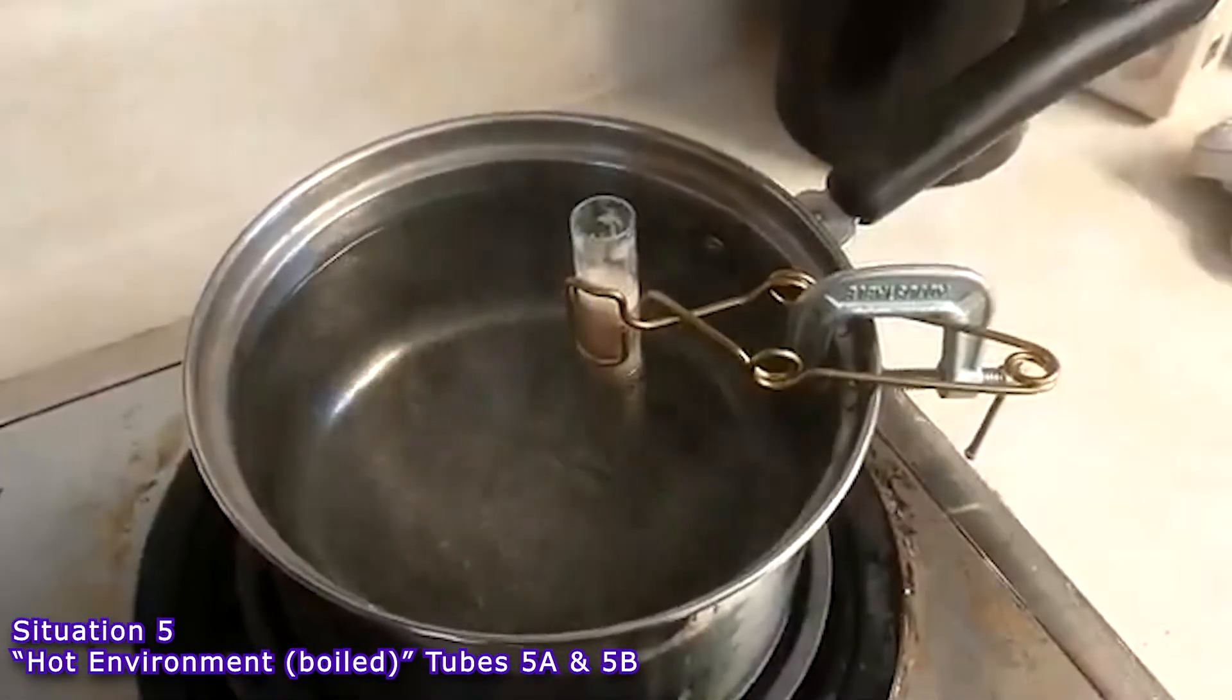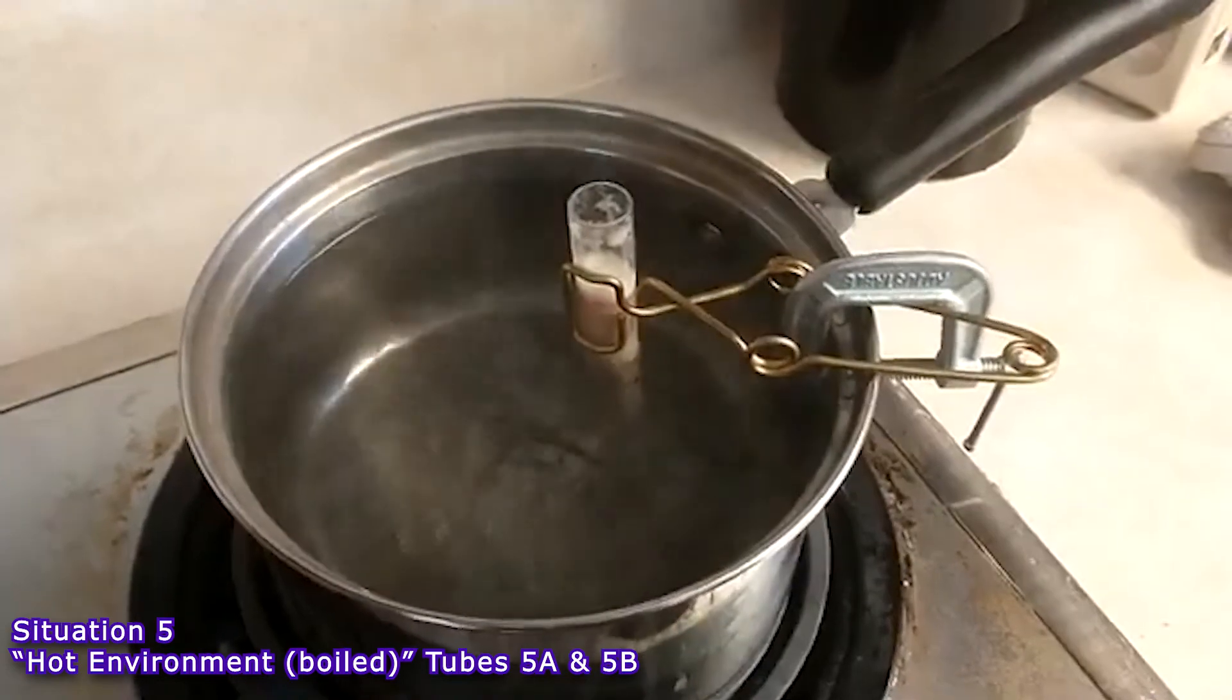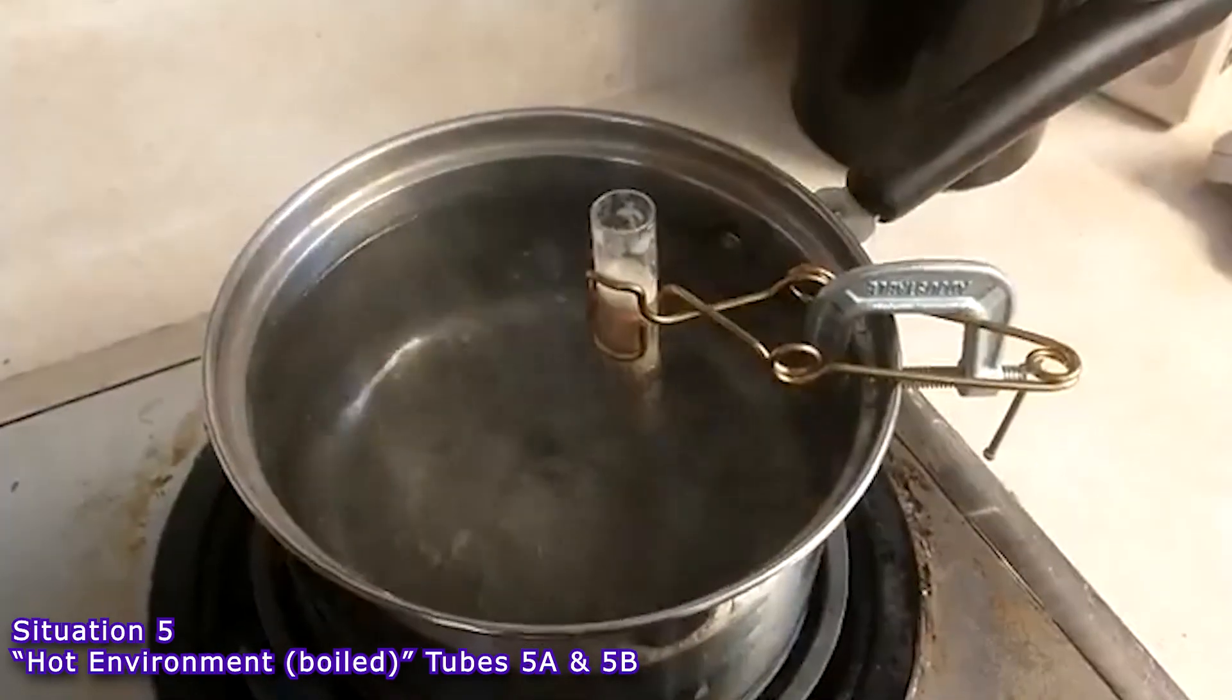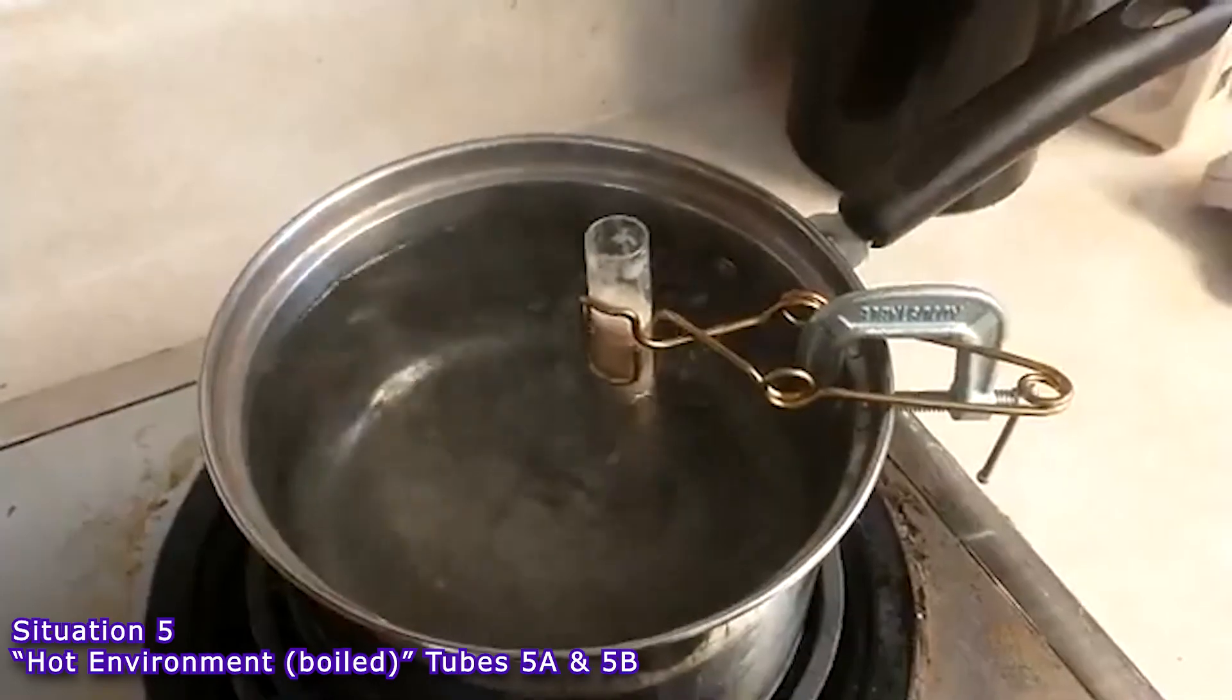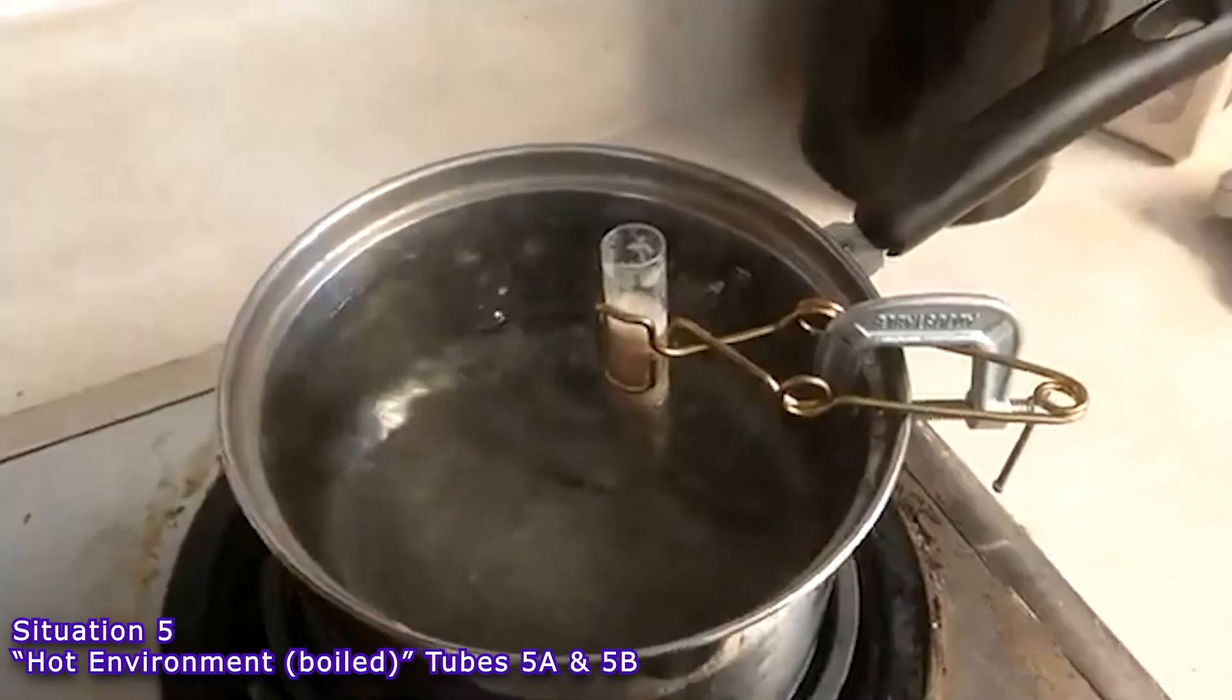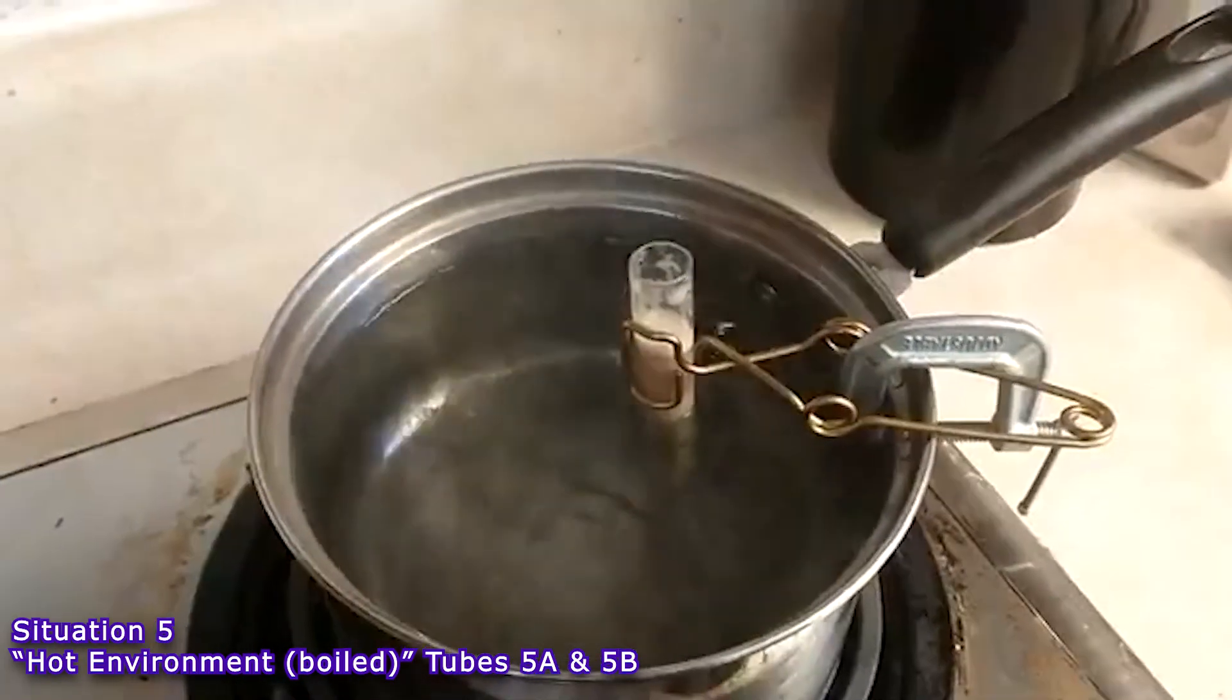Situation 5 is checking what happens when we boil the liver homogenate. So, for 5 minutes, I put a sample of liver homogenate on boil to see what would happen to the catalase enzyme in that environment. So, you'll notice that the sample of homogenate has a very different texture and color when I add it to tubes 5A and 5B.